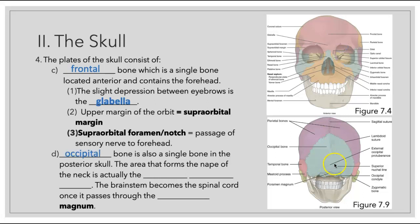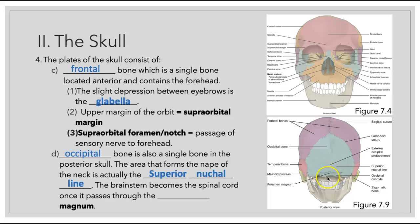Next up is our occipital bone. Looking at a posterior aspect of the skull, this too is a single bone and it is going to form the nape of the neck and has a structure called the superior nuchal line. Within this area, we will also have a large opening called the foramen magnum, essentially meaning large hole, where the brain stem is going to transition into the spinal cord and pass through.